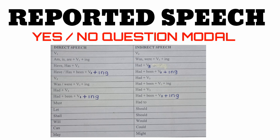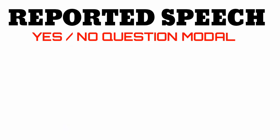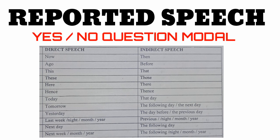You must also change place demonstratives and time expressions. The changes are as follows: now → then; ago → before; this → that; these → those; here → there; hence → thence; today → that day; tomorrow → the following day or the next day; yesterday → the day before or the previous day; last week/night/month/year → previous week/night/month/year; next day → the following day; next week/month/year → the following week/month/year.